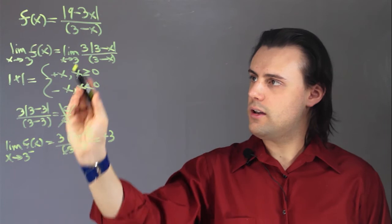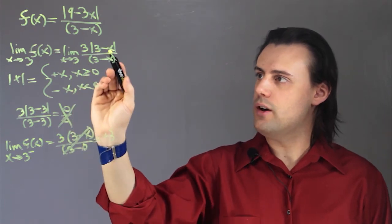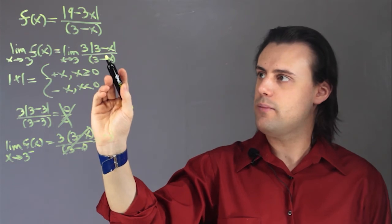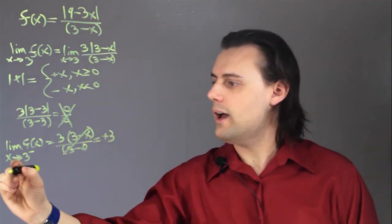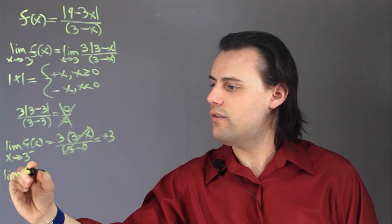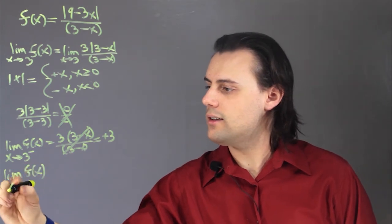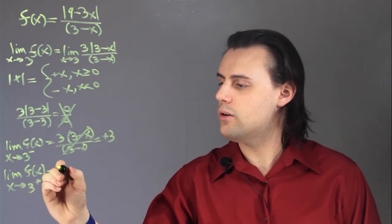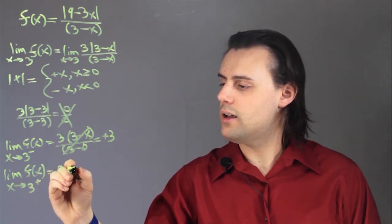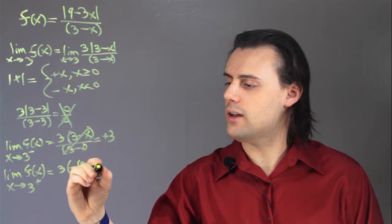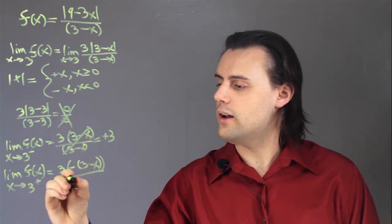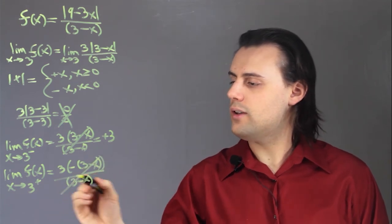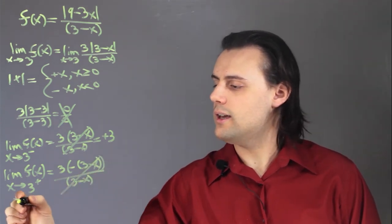If I approach 3 from the positive side, I'll notice that 3 minus a number larger than 3 is going to be a negative number. So, the limit of my function as x approaches 3 from the right-hand side is going to be equal to 3 times negative 3 minus x divided by 3 minus x, and this cancels out, so I'm left with negative 3.